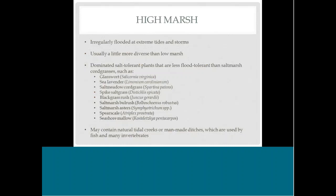Still higher in elevation is the high marsh. It is not flooded every single day — usually only at extreme tides or storms. Because there's less flooding, it allows for a little more plant diversity. Plants you might see include glassworts, sea lavender, salt meadow cordgrass, spike saltgrass, and others. You might still see creeks or ditches extending up into the high marsh.